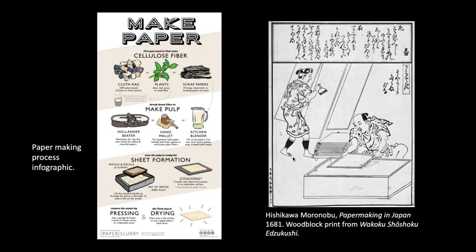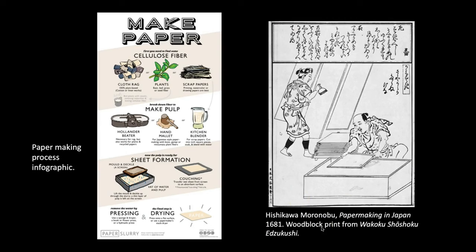Here I have an example of the papermaking process. You start with plants, scraps, or old clothing and basically make a pulp. You blend it up, suspend it in water, and then you usually have screens the size of your paper sheets that you lift, and then it dries and you press it. It is a very laborious process. I love this woodblock print from Japan showing the papermaking process in a studio for that culture.